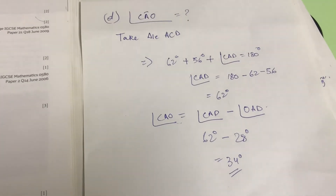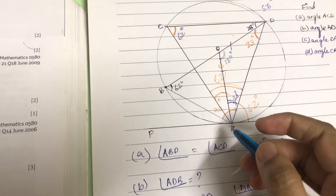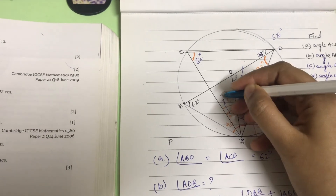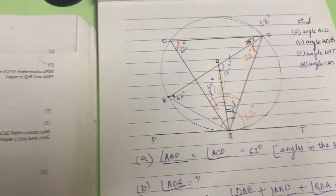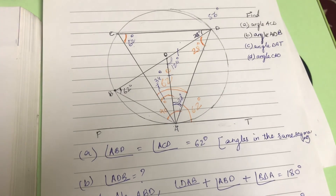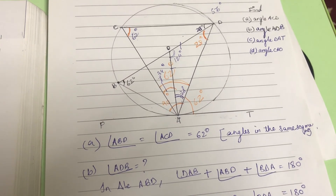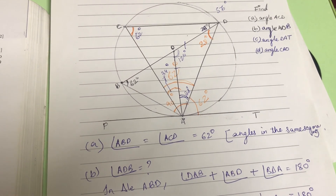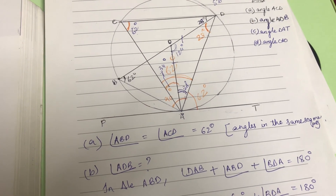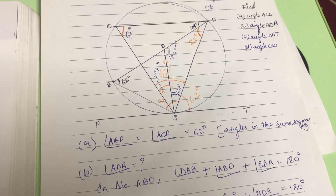So this is your answer — you have found all the angles. The final answer for angle CAO is 34 degrees. Thank you so much. Subscribe to my channel for more questions like this, and if you have any doubts, write them in the comment section.